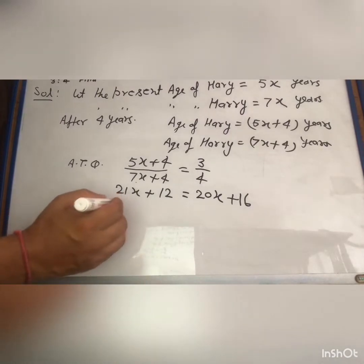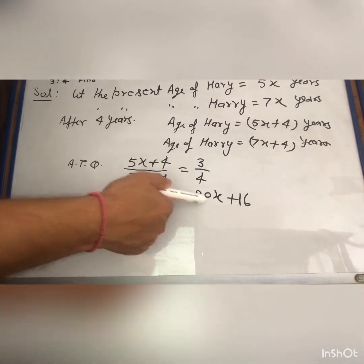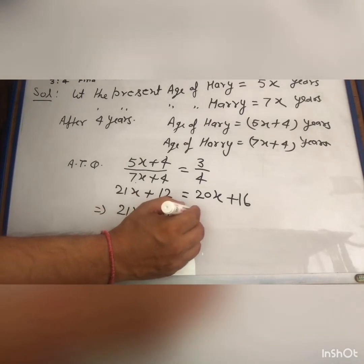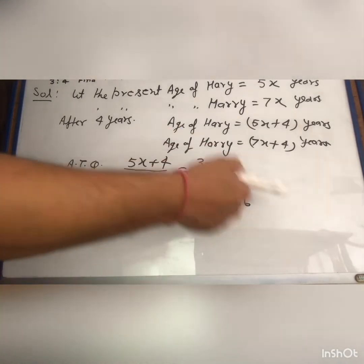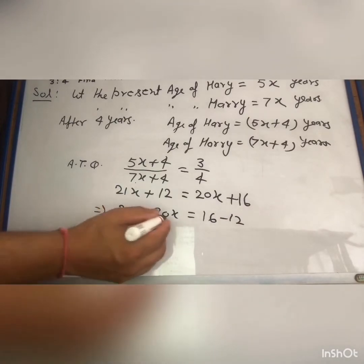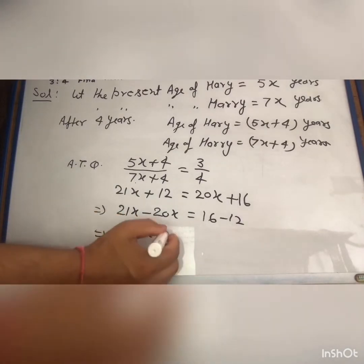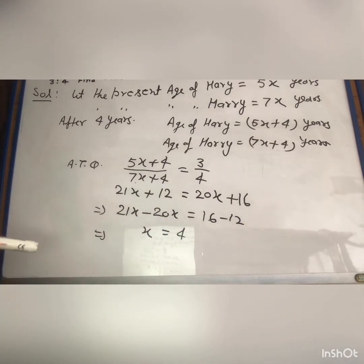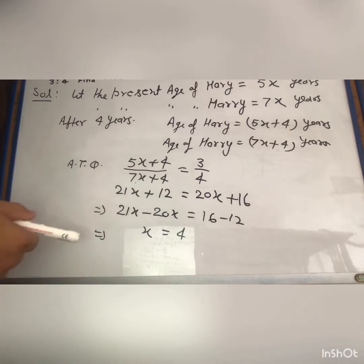After transposing variables to the left and numbers to the right, we get 21x minus 20x equals 16 minus 12. So 21x minus 20x gives only x. And 16 minus 12 gives 4. Therefore x equals 4. But this is not the final answer — this is only the value of the variable.